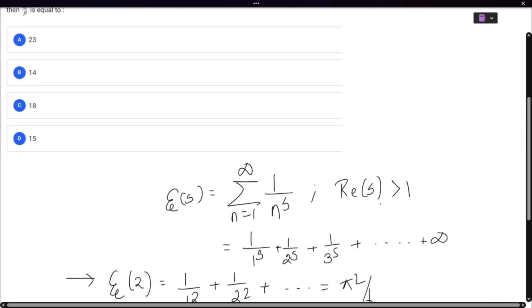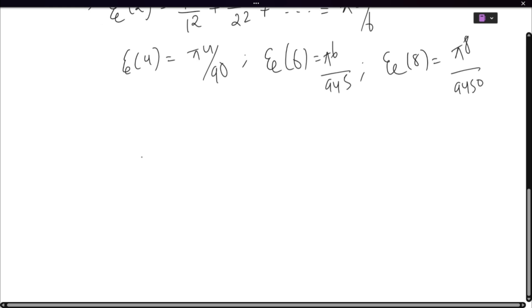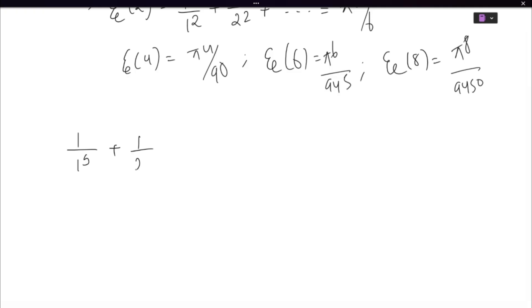Now the question comes, how do we find out alpha and beta? So first of all, start with the function. Start with your given identity. Let's say we're talking about 1 by 1 to the power s, the general series, where you have this total thing, and its value is given as some capital A.